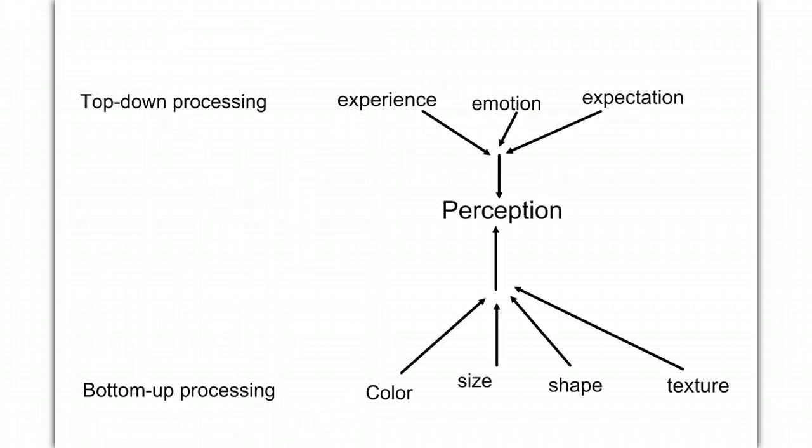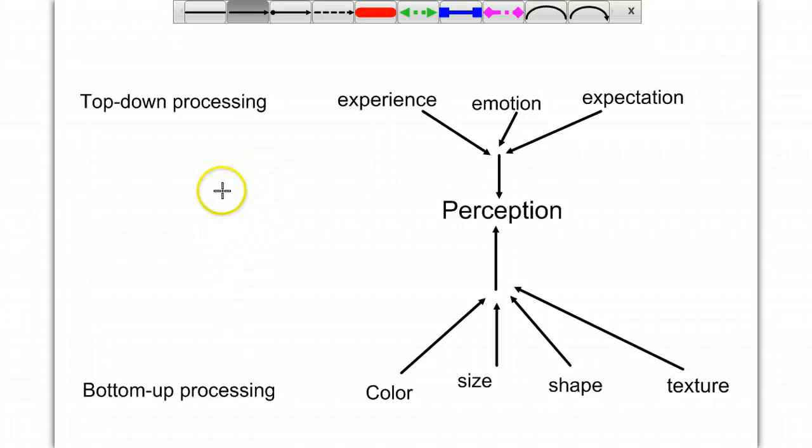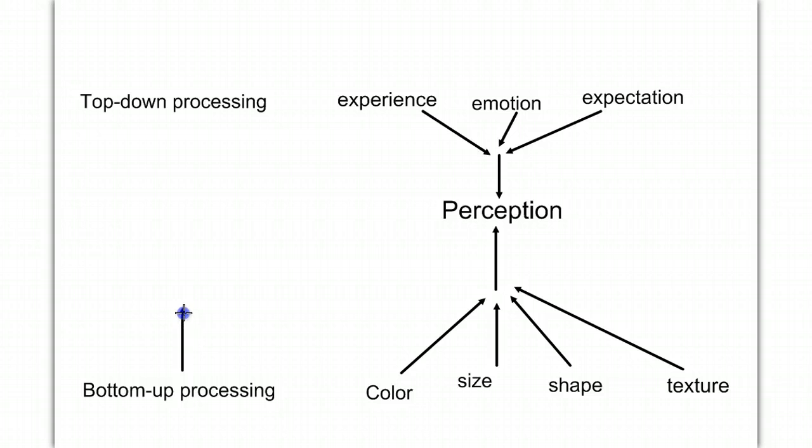When we process information, we go about it in two ways. If I handed you an object and asked you what it was, you might take into account its elements: shape, size, texture, color. You would feed that sensory input into your brain in what we call bottom-up processing.